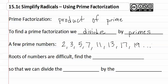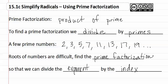Roots of numbers are difficult, so if we find the prime factorization, we can divide the exponent by the index just as we have done with variables. Let's see how this is applied in example one.